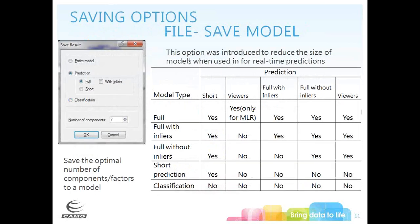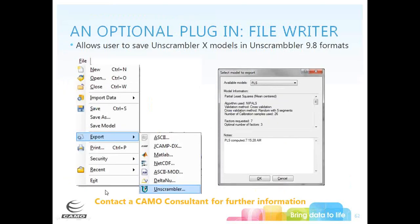When you have different models, you can save them in different file sizes, helpful for real-time predictions within the Unscrambler Process Pulse or prediction engines embedded in other software. An optional plug-in file writer allows saving Unscrambler X models in the Unscrambler 9.8 format — please contact a CAMO consultant for information on receiving this plug-in.